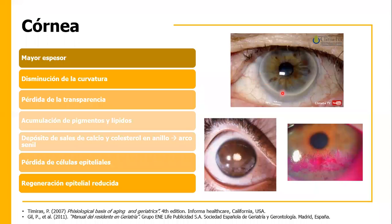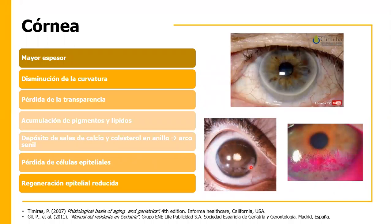El arco senil son cúmulos de colesterol y calcio ubicados entre la córnea y el iris, sin ninguna relevancia clínica. También se da una pérdida de células epiteliales, como podemos ver en esta imagen teñida con rosa de bengala, vista con luz azul cobalto, que nos indica el daño epitelial. Aquí podemos ver infiltrados y acumulación de pigmentos, probablemente sales de calcio.